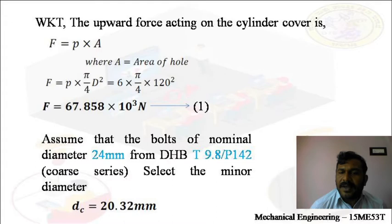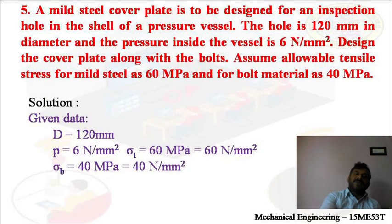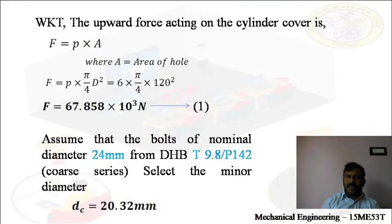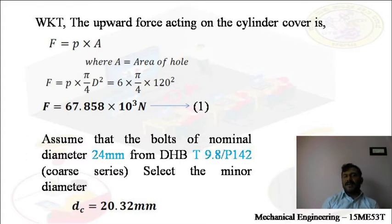As usual, we are going to calculate the upward force acting on the cylinder cover. That is F = P × A, where A is the area of the hole. F = P × (π/4) × D² = 6 × (π/4) × 120². By using a calculator, you will get F = 67.85 × 10³ N.